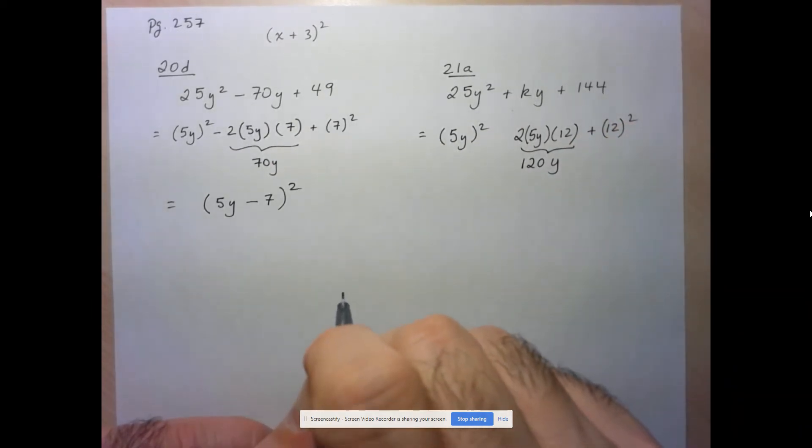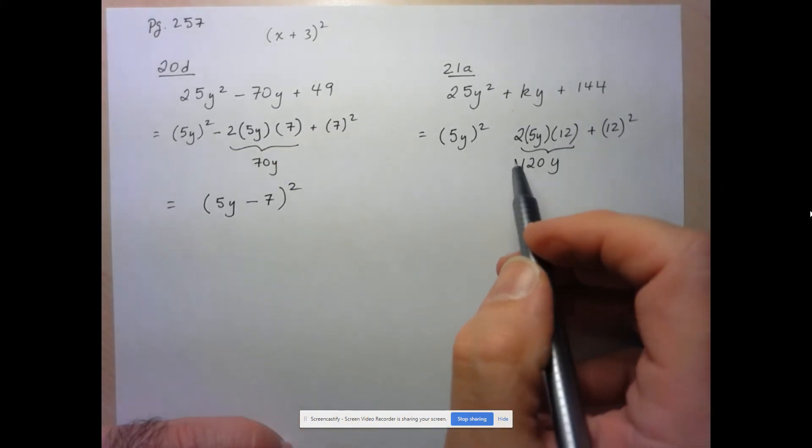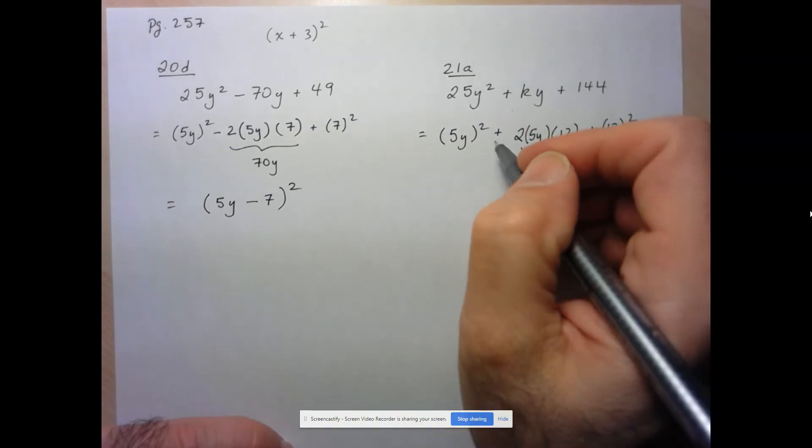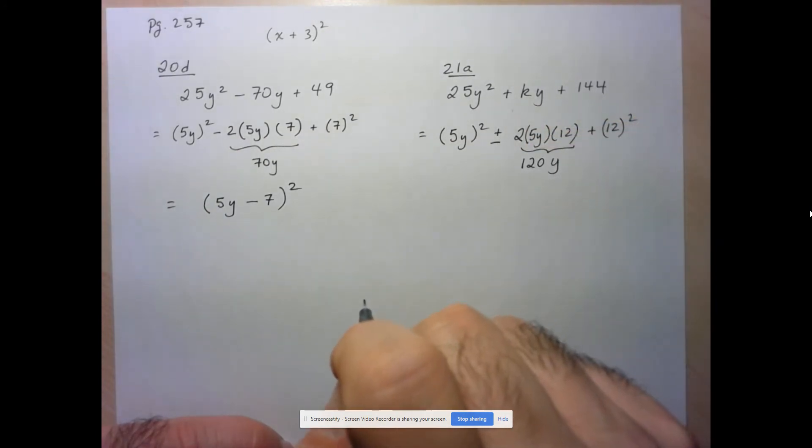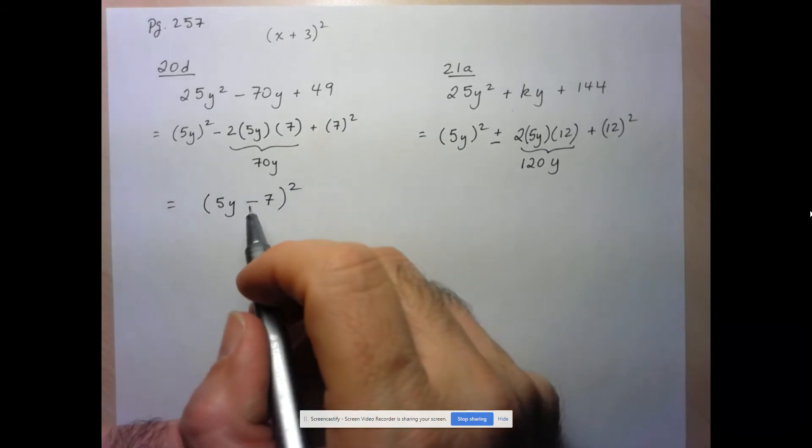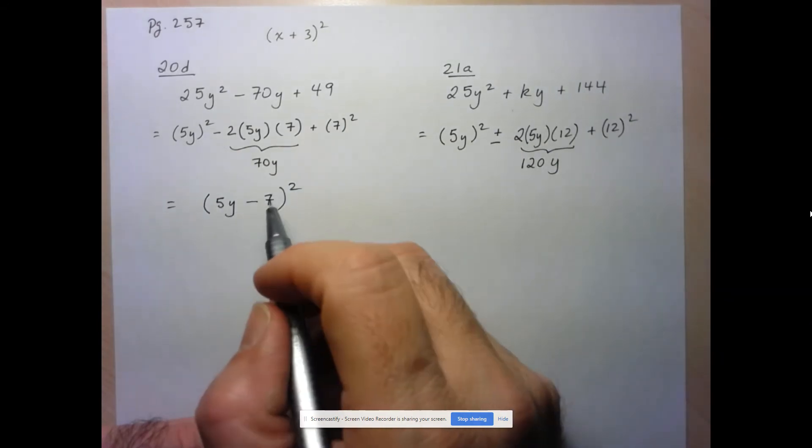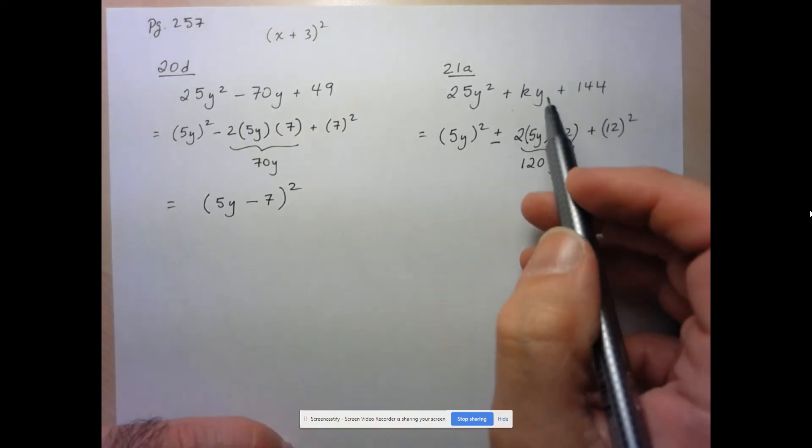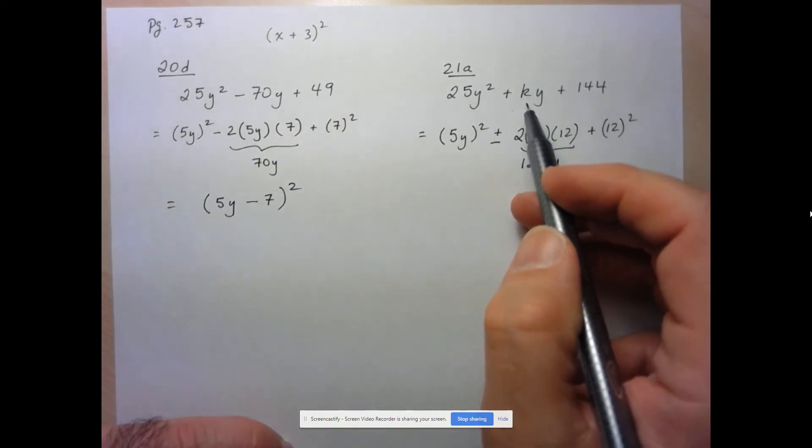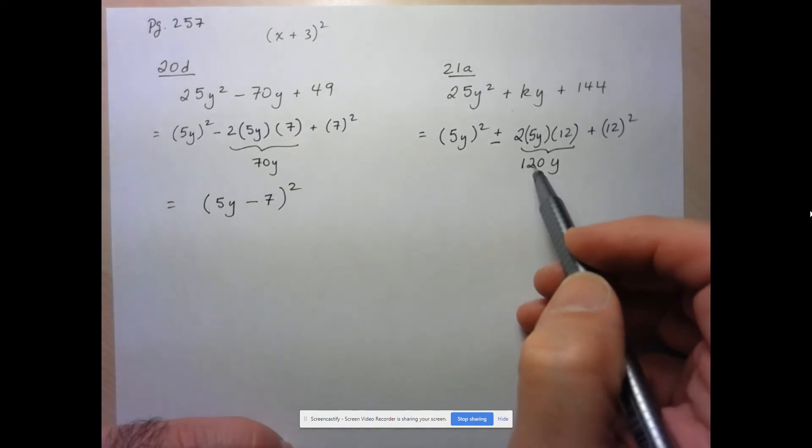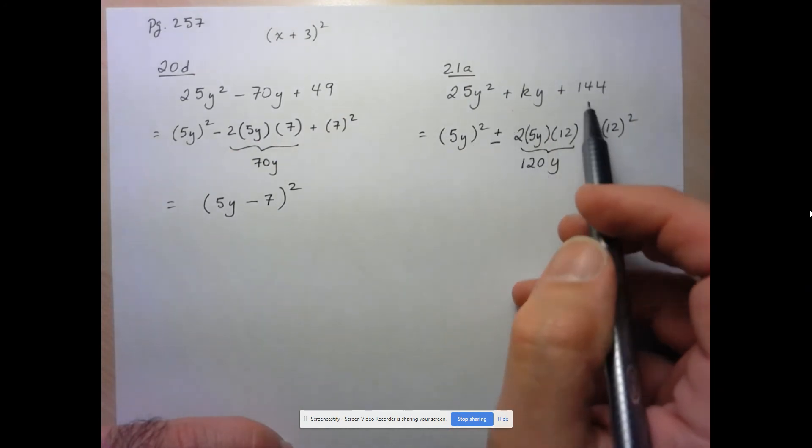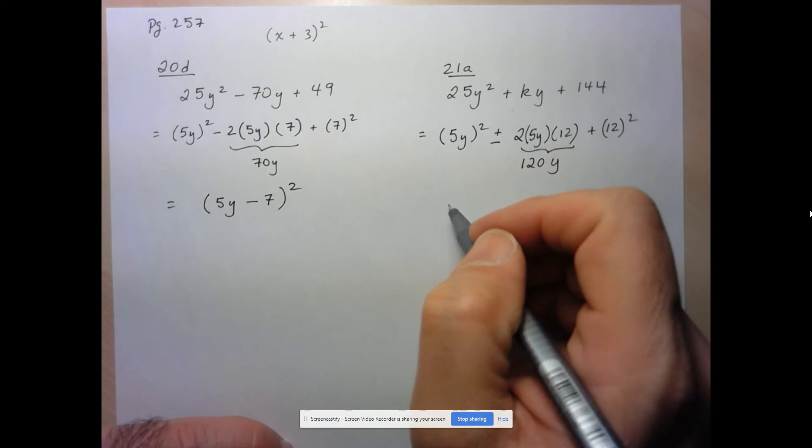Now this is where we have to be careful here because we could have both plus 120y or minus 120y. Depending on whether the expression inside the bracket, the binomial, is an addition or a subtraction. So what can k be equal to? It could either be equal to positive 120y or negative 120y because that will create an expression which follows the rule for a perfect square trinomial. So here are answer.